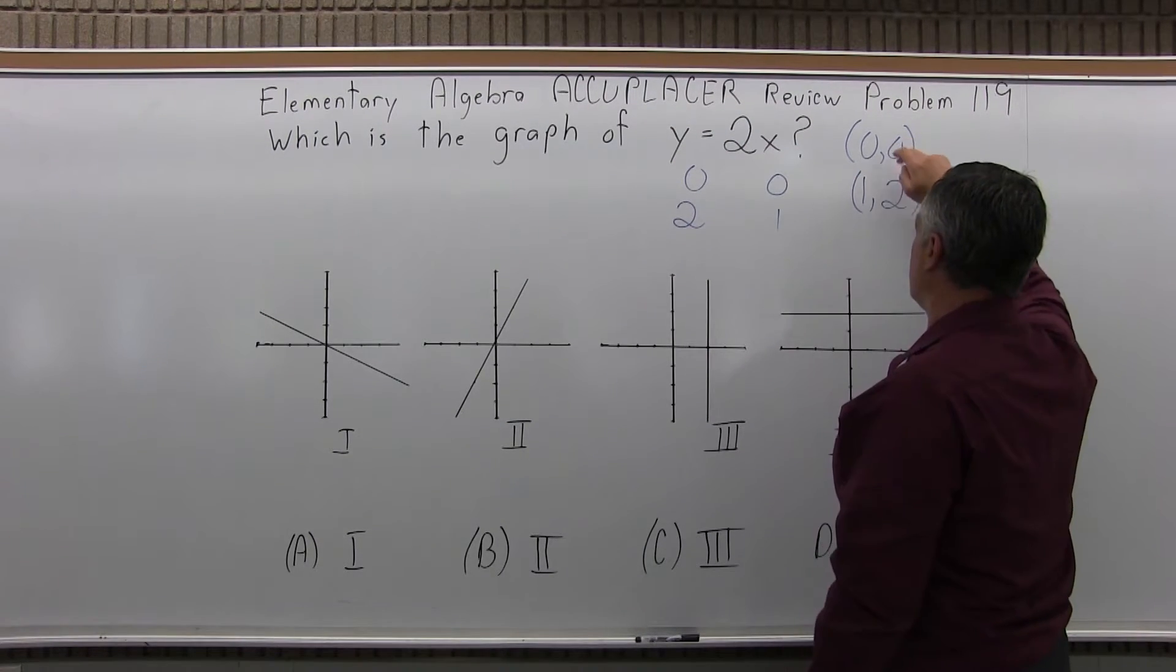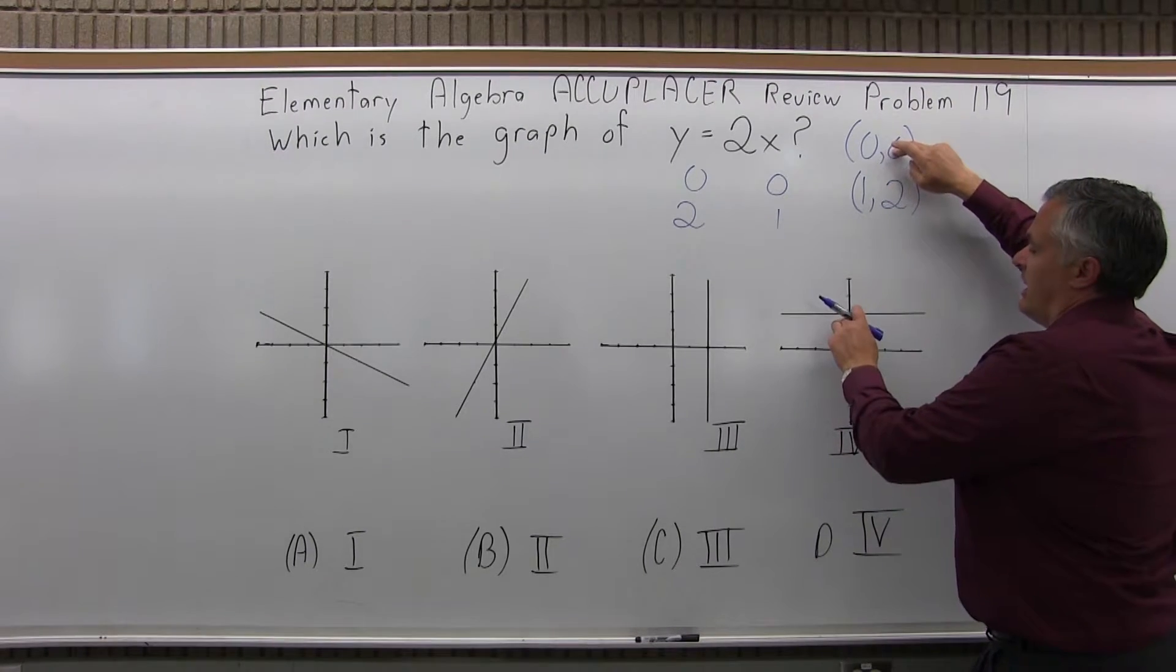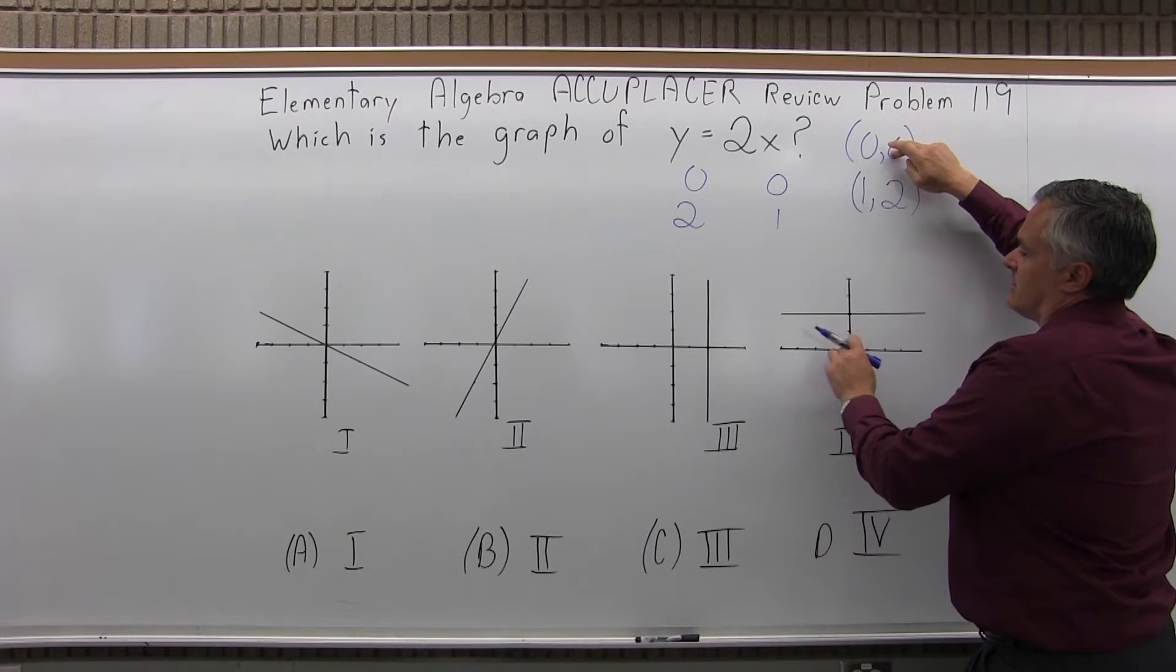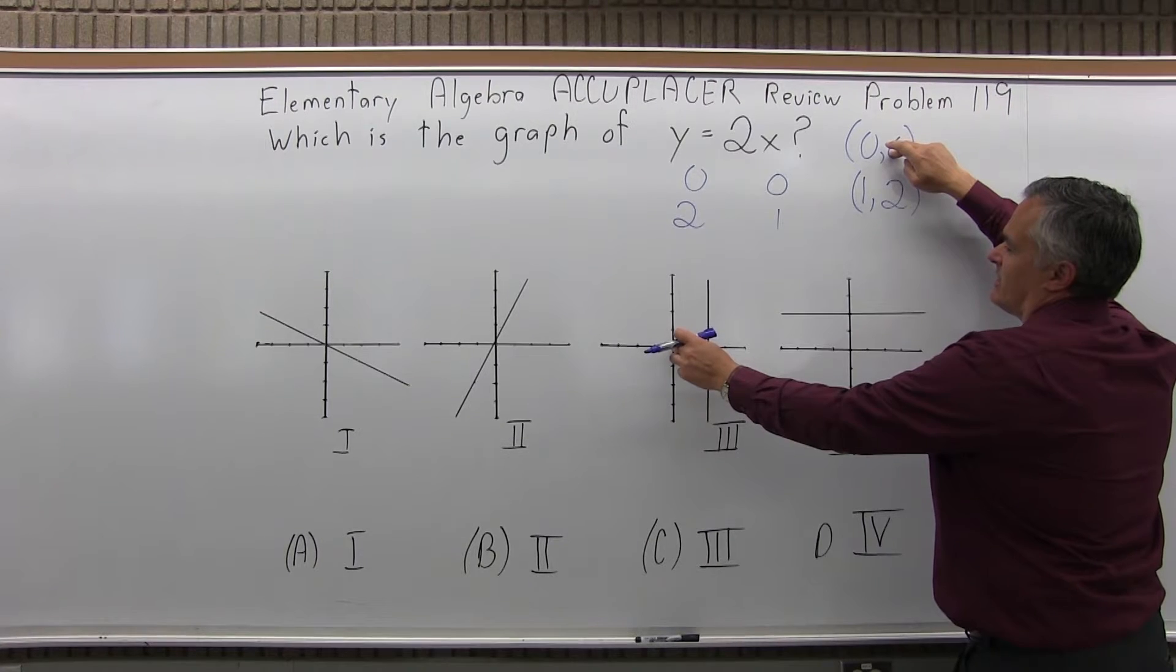So I have two points, 0, 0, and 1, 2. So because it goes through 0, 0, I can eliminate this one right away, it doesn't go through 0, 0. I can eliminate the next one right away, it doesn't go through 0, 0.